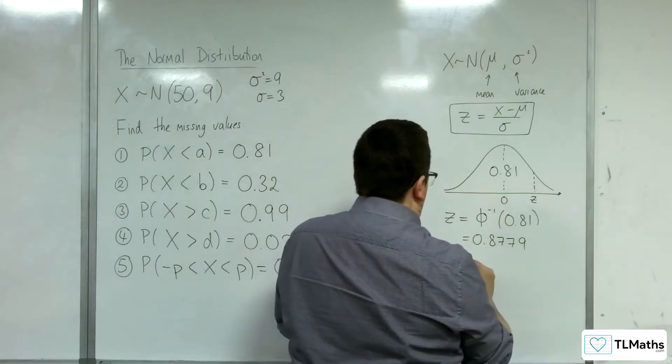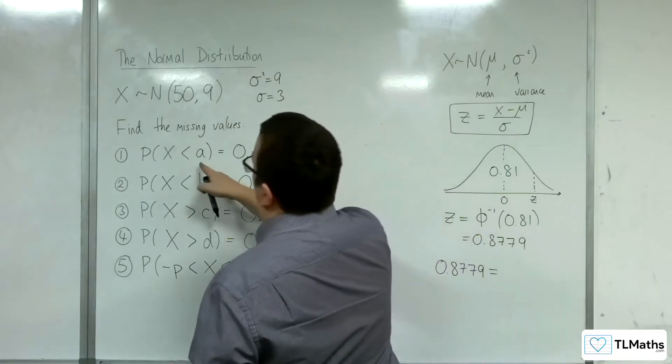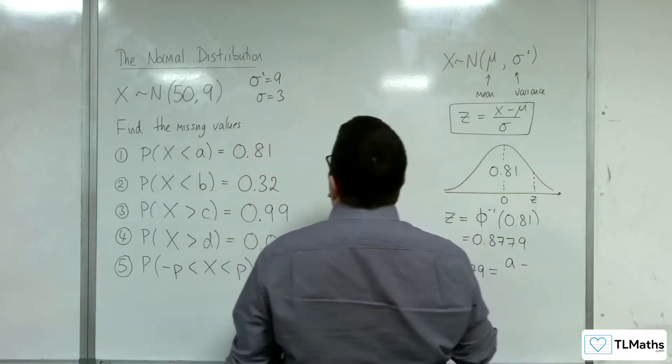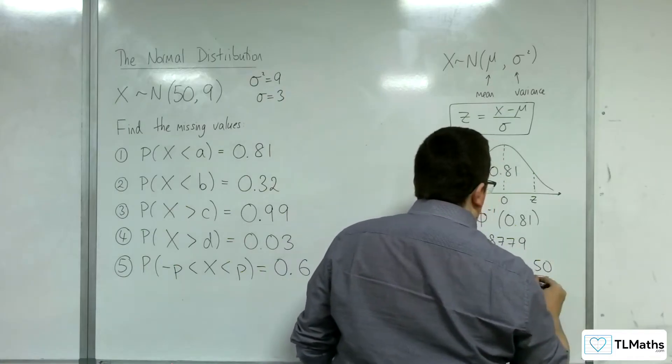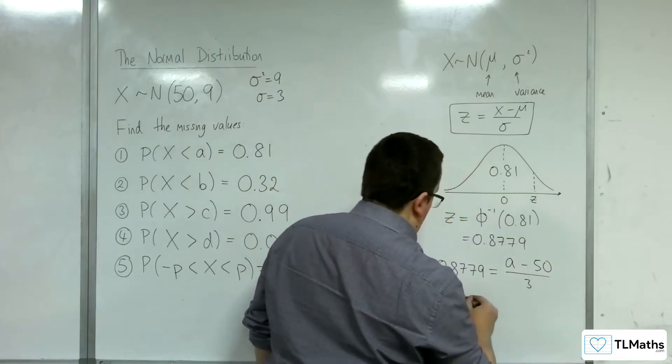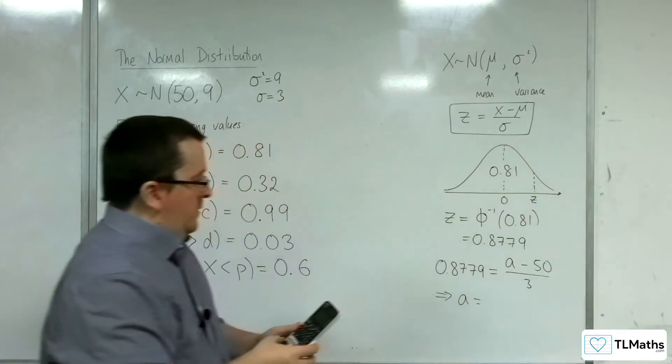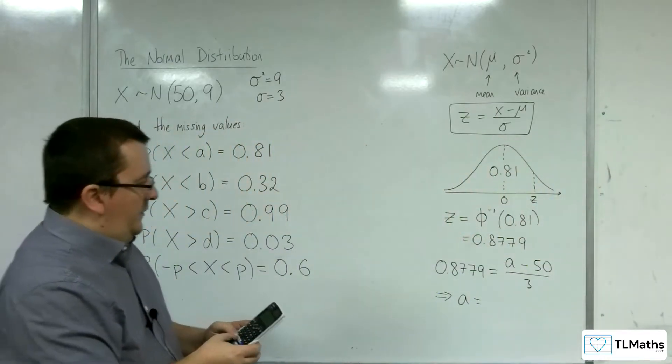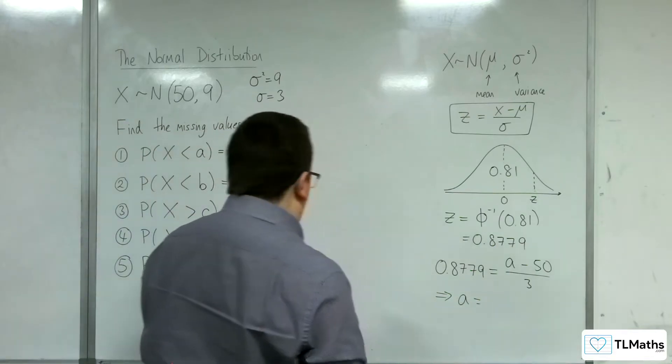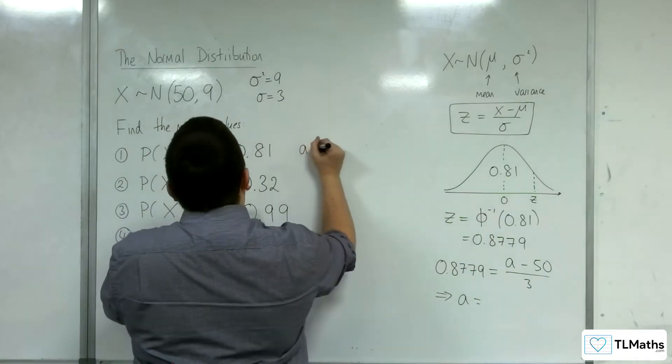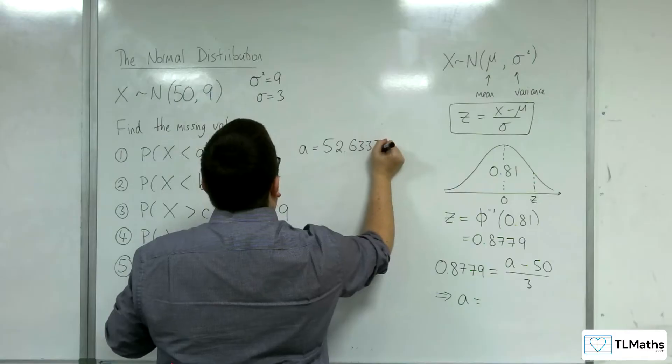That's the z value that goes into the formula. So 0.8779 is equal to the x value is the value I'm trying to find, A, take away mu, which is 50, divided by sigma, which is 3. And that gives me an equation to solve. So 0.8779 times by 3, then add on 50, and we get 52.6337. So A is 52.6337.